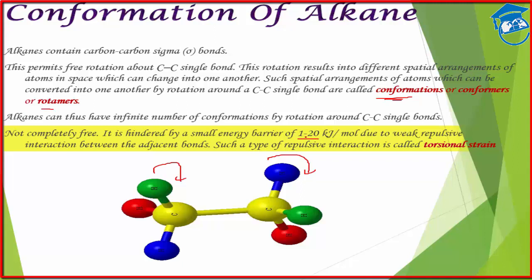However, such rotations are not completely free — they have a certain small energy barrier. This barrier arises because of interaction with adjacent bonds of the conformers, which results in strain known as torsional strain. Due to this, abundant conformers are possible, but they keep changing as they cross the energy barrier. Depending on temperature they will have different arrangements — like eclipsed or staggered.